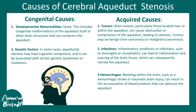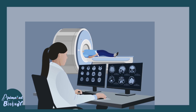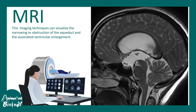Cerebral aqueductal stenosis can be diagnosed using magnetic resonance imaging. In a typical MRI image, one can clearly see the cerebral aqueduct is obstructed and that has massively dilated the lateral ventricles, which is very distinct in an MRI image.